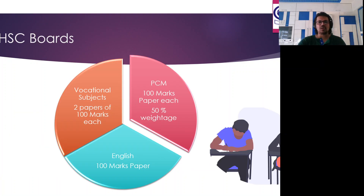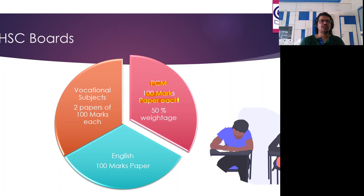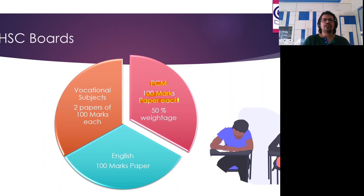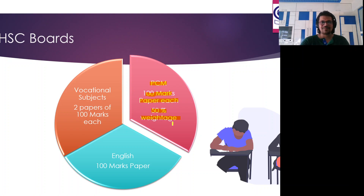Now, for the HSC boards: physics, chemistry, and maths are each a 100-mark paper. Out of 100, practicals are 20 marks, 10 marks is your project, and 70 marks is the theory paper. The theory paper has MCQs, one-sentence answers, give-reasons, short answers, numericals to solve, and long answers. You are supposed to get a decent 50% in each of physics, chemistry, and maths. This 50% is only an eligibility weightage — it does not mean you should target only 50%.